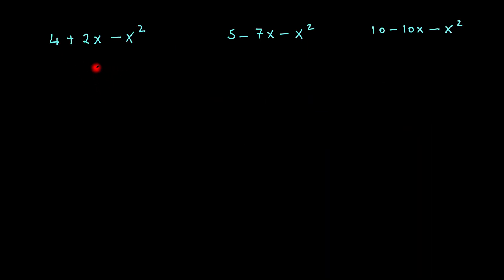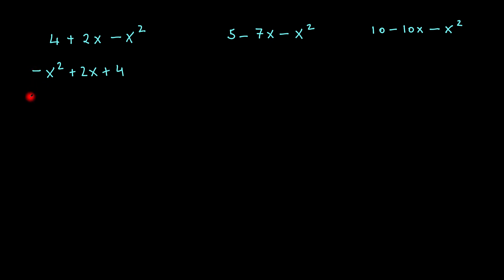Okay guys, here's another three examples. This time we have a negative in front of the x squared term — how do we deal with that? Well, I'll rewrite this as negative x squared plus 2x plus 4. What I'm going to do is take the minus out and factor out the minus 1 basically.